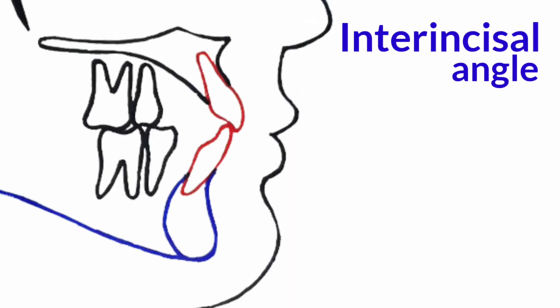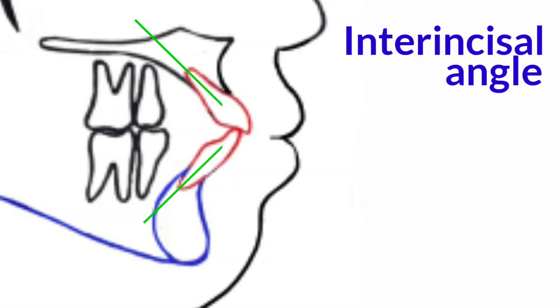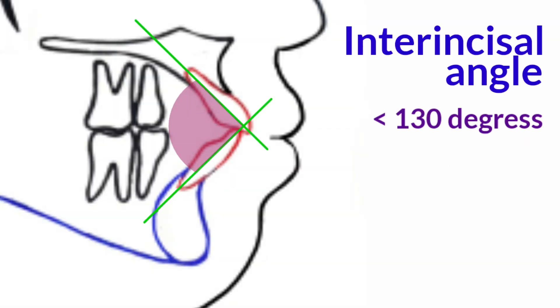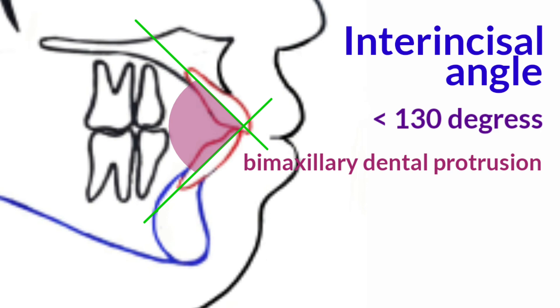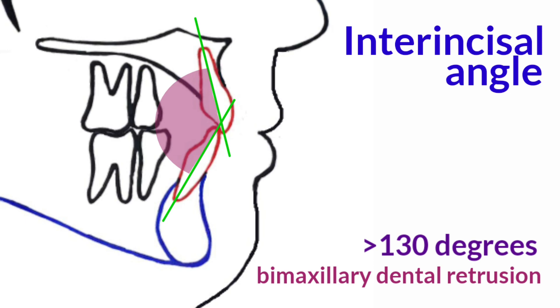The interincisor angle is formed between the long axis of the upper and lower incisors. It relates the relative position of the maxillary incisors to the mandibular incisors. The ideal is 130 degrees. A smaller interincisor angle is found in bimaxillary dental protrusion, while a bigger interincisor angle is found in bimaxillary dental retrusion.